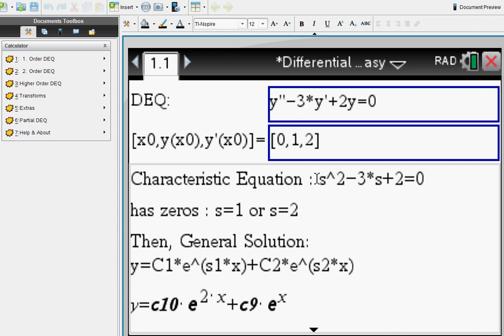You can see that the characteristic equation based on this differential equation is this, and you solve that characteristic equation, you get your zeros. You plug in your zeros, 1 and 2, into your general solution, and here we go.